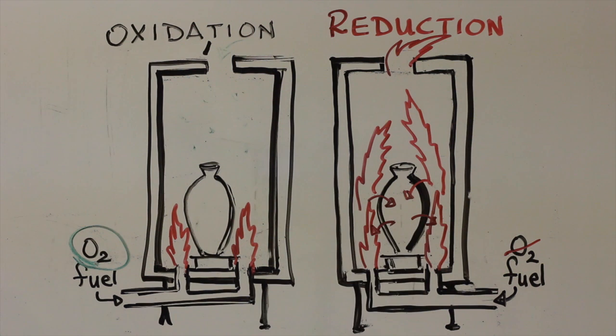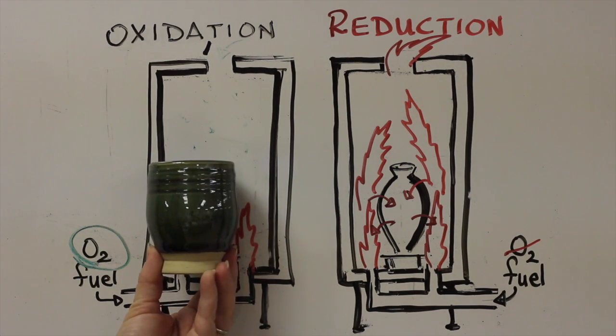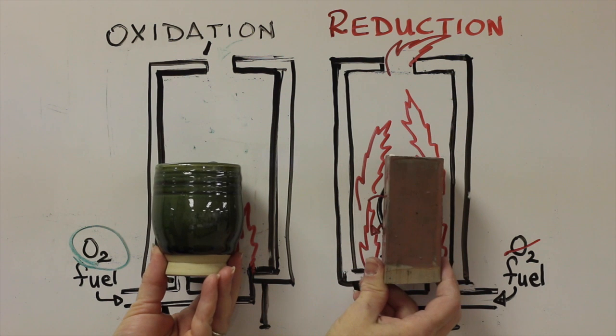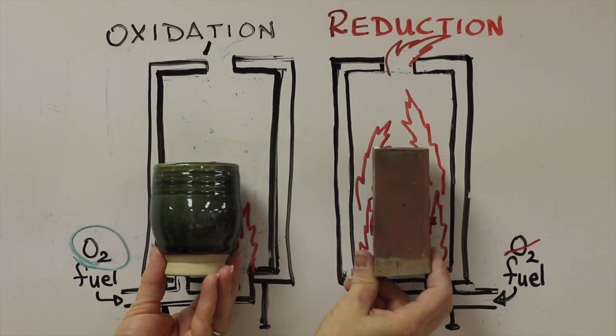Most strikingly, copper glazes, when fired in oxidation, are green, but when fired in reduction, often turn deep red. These two are the same glaze and same clay body, one fired in oxidation, one in reduction.